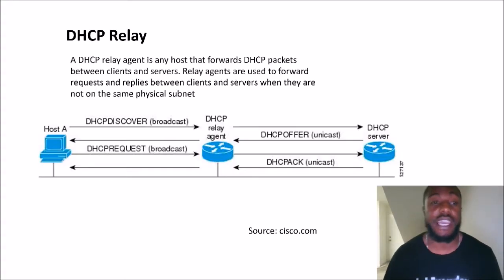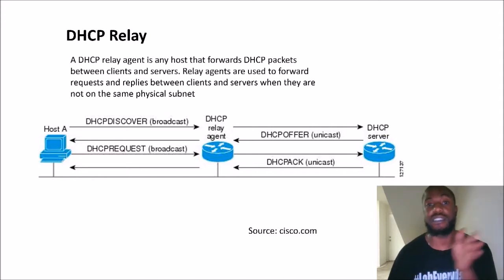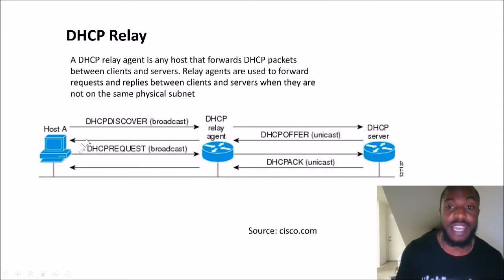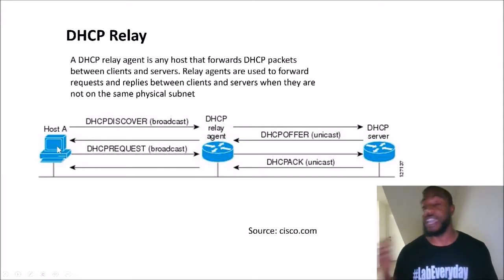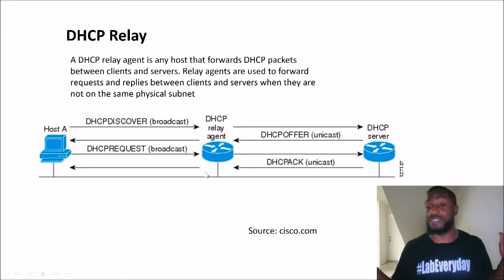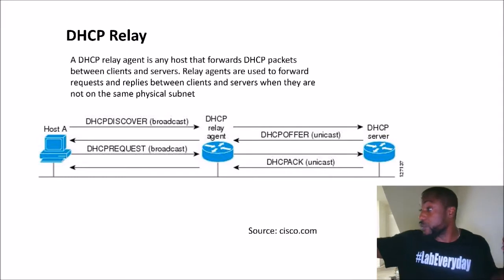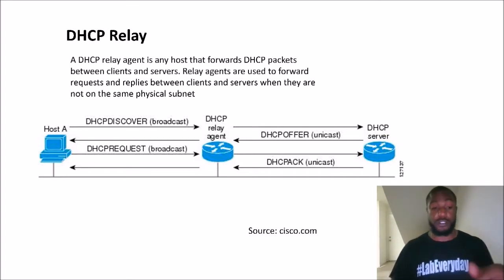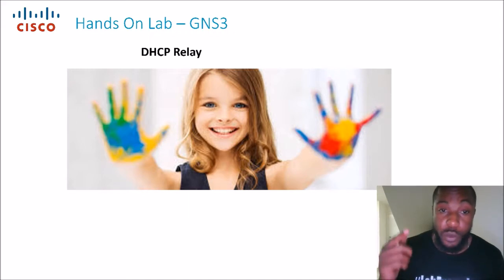A DHCP relay agent is any host that forwards DHCP packets between clients and servers. Relay agents are used to forward requests and replies between clients and servers when they are not on the same physical subnet. If you look at this topology, we have the DHCP server on the right-hand side and a host on the other side that is not in the same network. The relay agent in the middle acts as a middleman, taking requests and handing them off to the server.